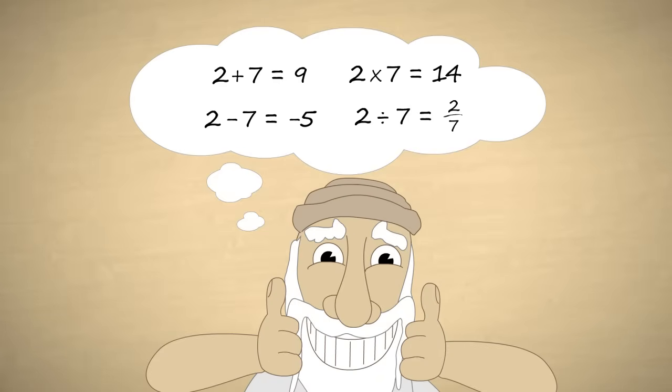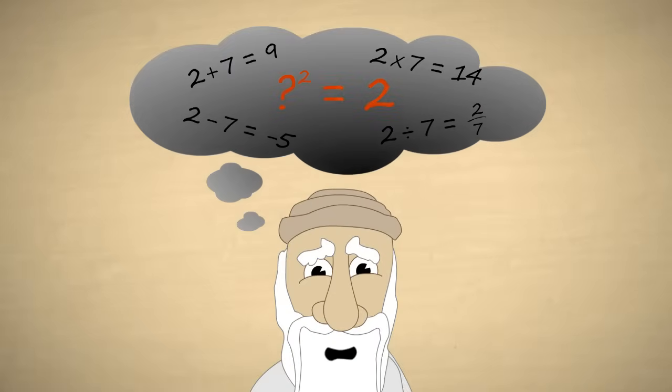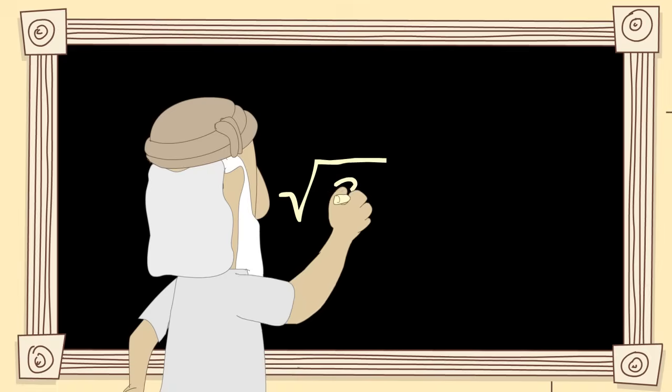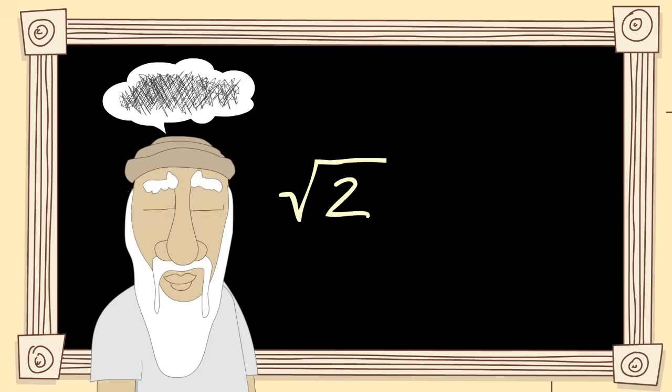This is what the Greeks thought as well. That is, until they discovered an inconvenient truth: that there are certain types of quantities that cannot be represented by rational numbers.